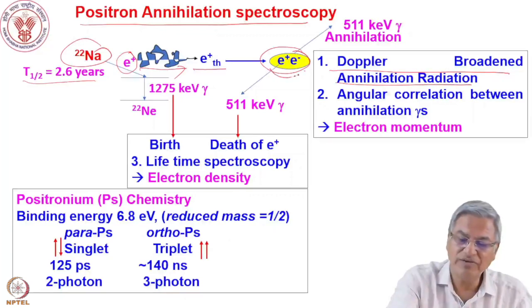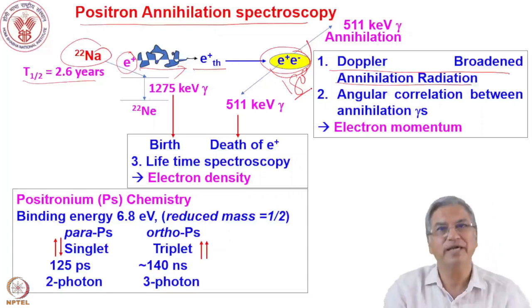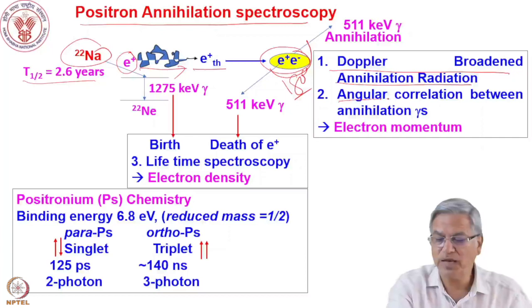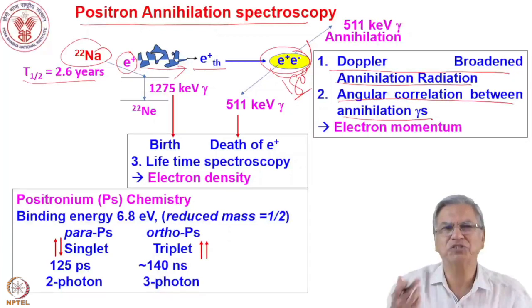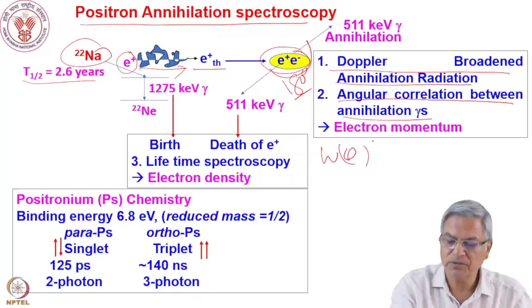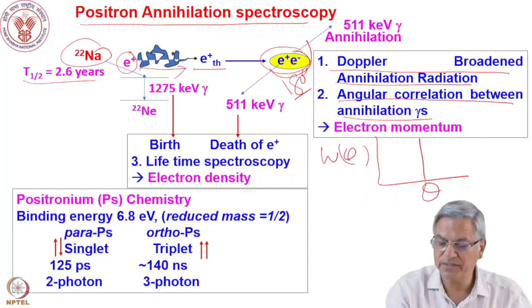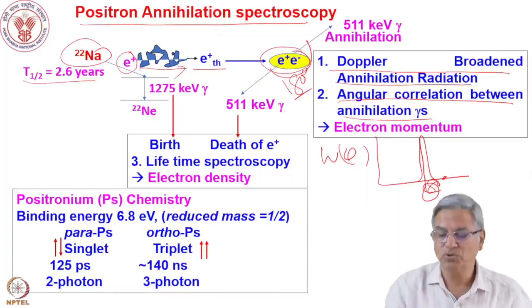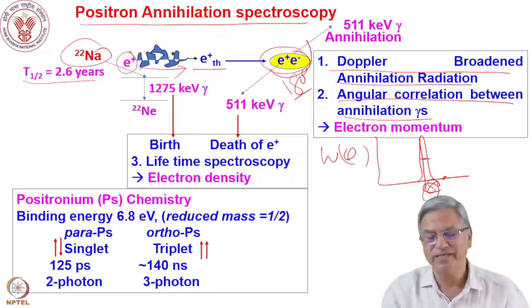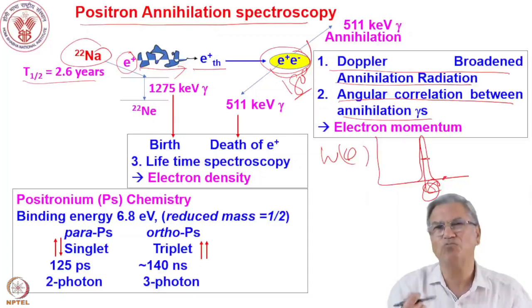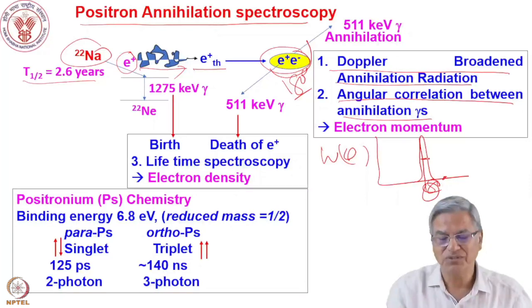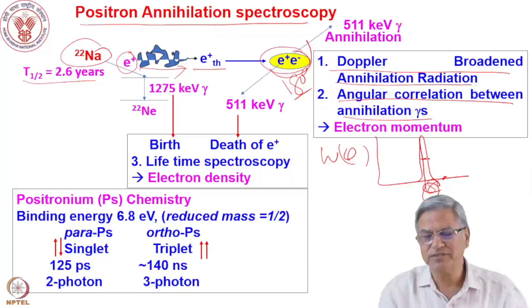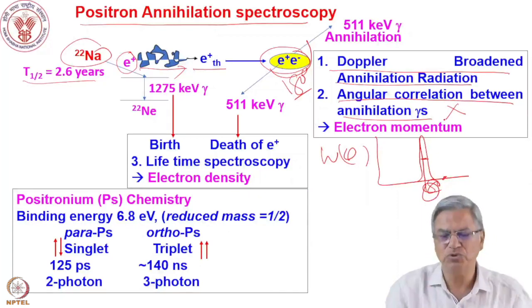Secondly, these two 511 keV gammas should be at 180 degrees due to conservation of linear momentum. The angular correlation between these two gamma rays — measuring coincidence counts as a function of W(θ) versus θ — should give a line at 180 degrees. But because of the electron momentum, there is an angular deviation. More than ±180 degrees, some counts are seen. This deviation from 180 degrees is because of the momentum of the electron, and so you can study what type of electrons are involved when the positron annihilates. These are the two techniques: Doppler broadened annihilation radiation (DBAR) and angular correlation between annihilation radiations.